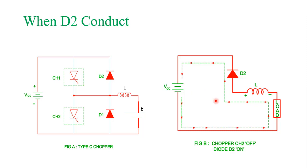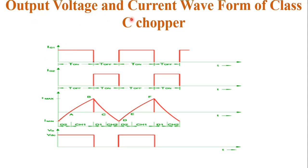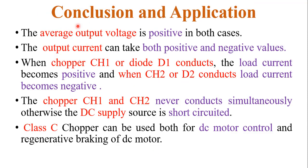Now the operation of Class C chopper is explained with the help of output voltage and current waveforms. IG1 is the gate current required to turn on SCR1, which means chopper CH1. IG2 is the gate current required to turn on SCR2, which means chopper CH2. The output current waveform is sometimes negative and sometimes positive, but the output voltage is always positive. So the device works in the first and second quadrant of the V-I plane.